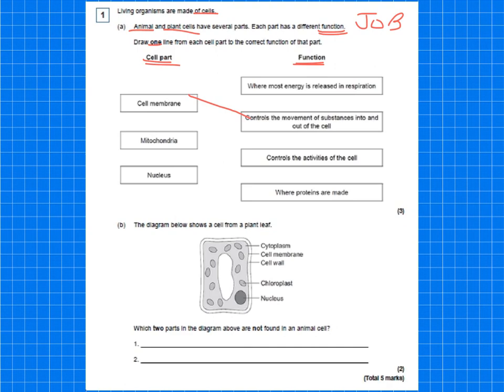So cell membrane, it controls the movement of substances in and out of the cell. Mitochondria, their function is where most energy is released in respiration. Then the final one, nucleus, and it controls the activity of the cells. Think about where proteins are made. If it did ask that, it would be ribosomes.